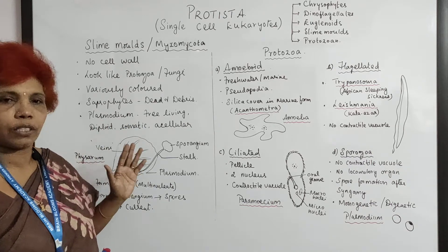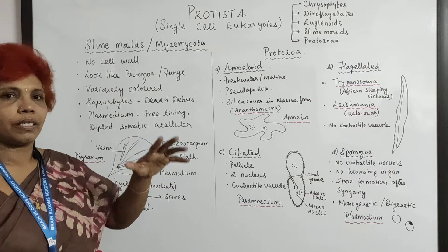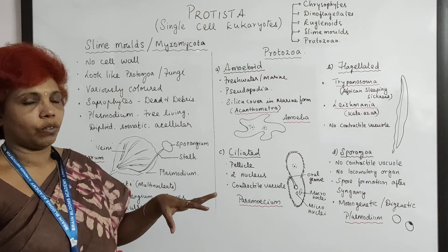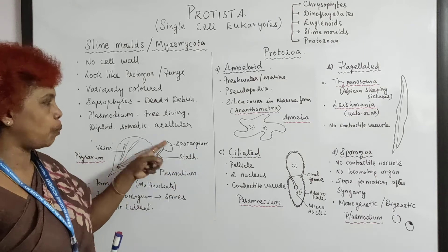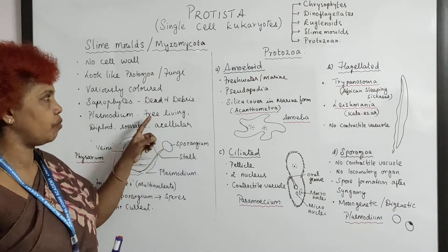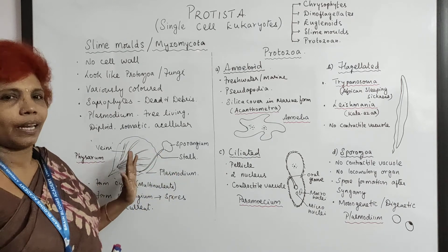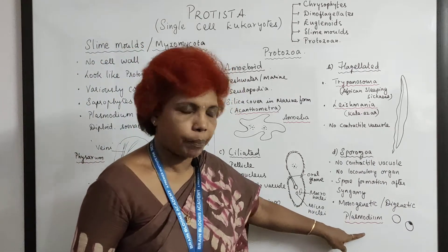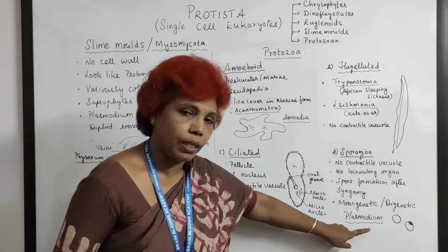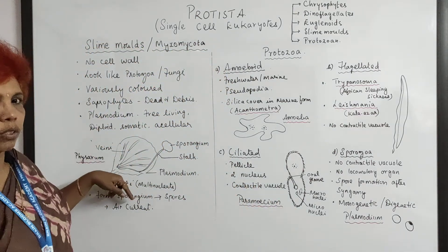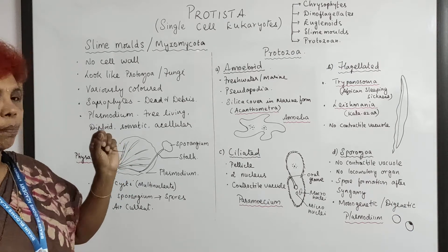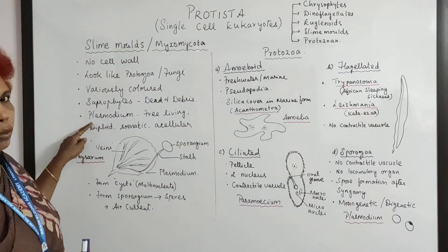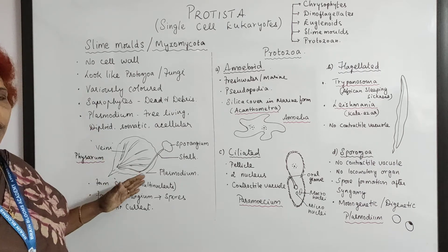Slime molds are all saprophytes — they grow on dead debris, leaves, and fragments, decaying organic material for nutrition. The spores are liberated in air currents. They are also very colorful. Note that plasmodium in italics refers to the genus name (the malarial parasite), while plasmodium in normal letters refers to the structural plasmodium of slime molds — do not confuse the two.